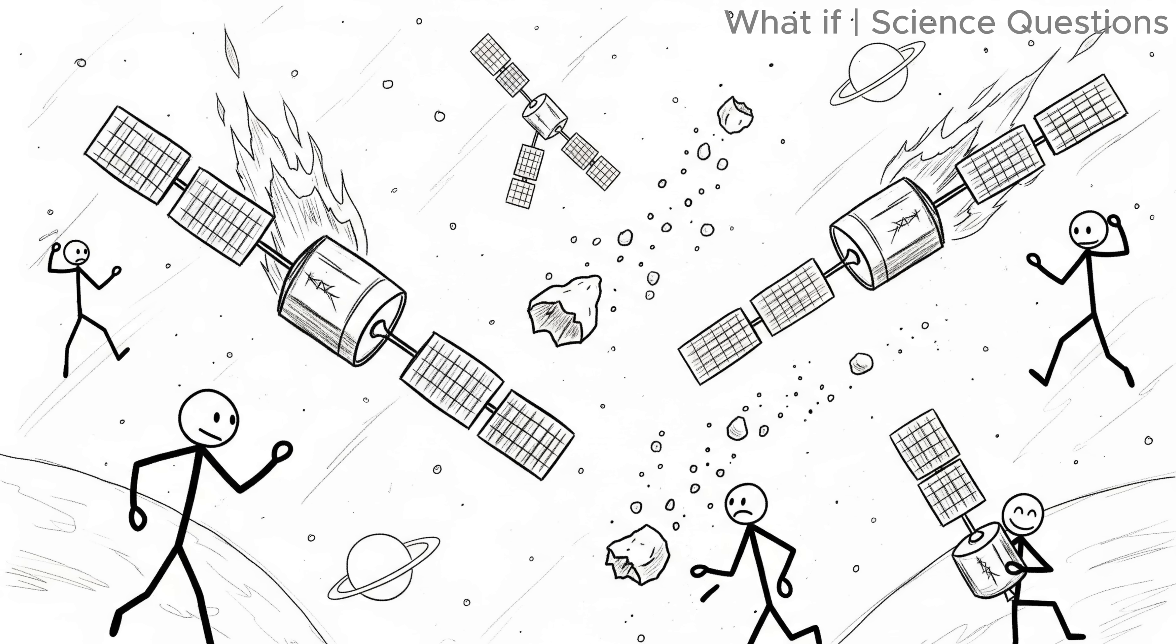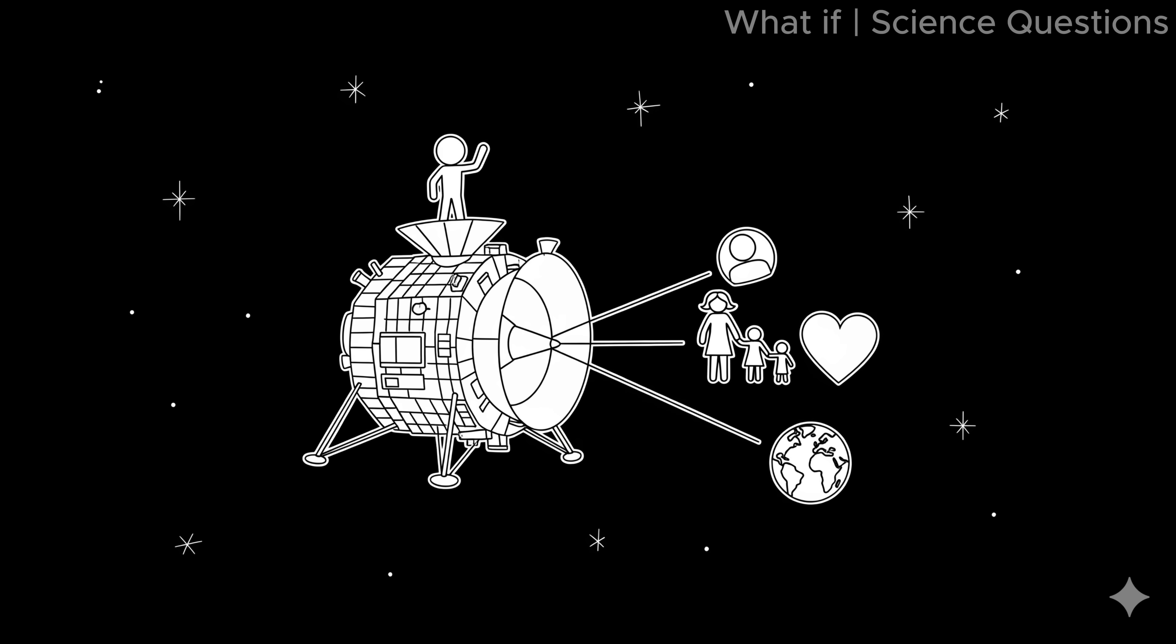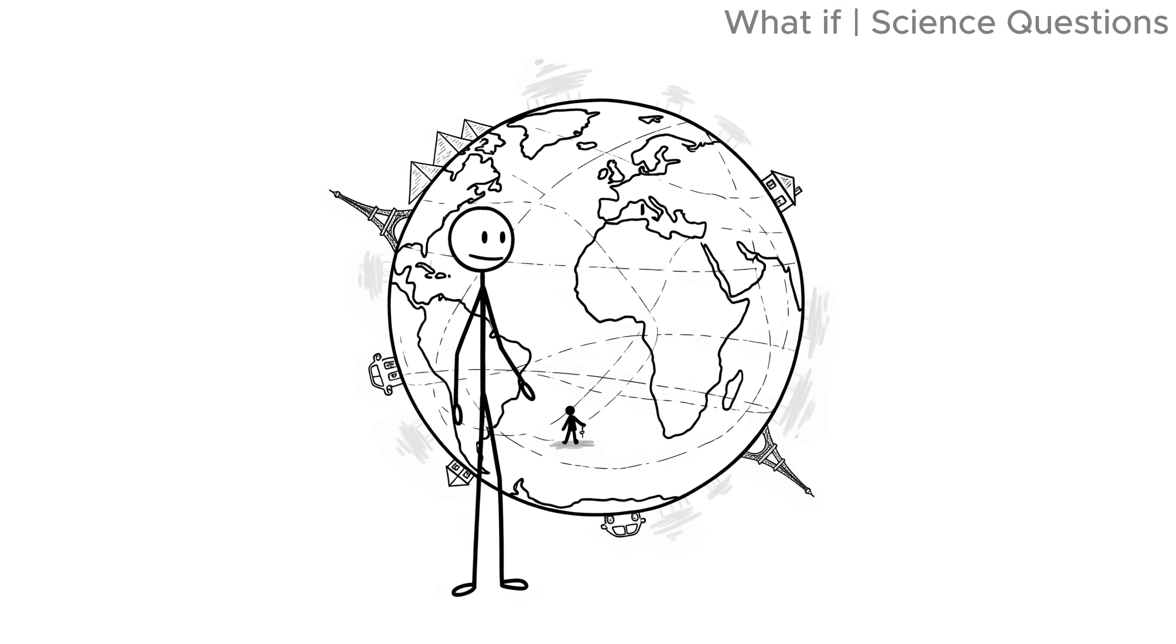Some would burn up in the atmosphere after decades or centuries. Others would drift endlessly, becoming space junk, faint echoes of a civilization long erased. Beyond them, a handful of probes, like Voyager, would carry humanity's fingerprints across interstellar space. But on earth itself, our story would fade away.